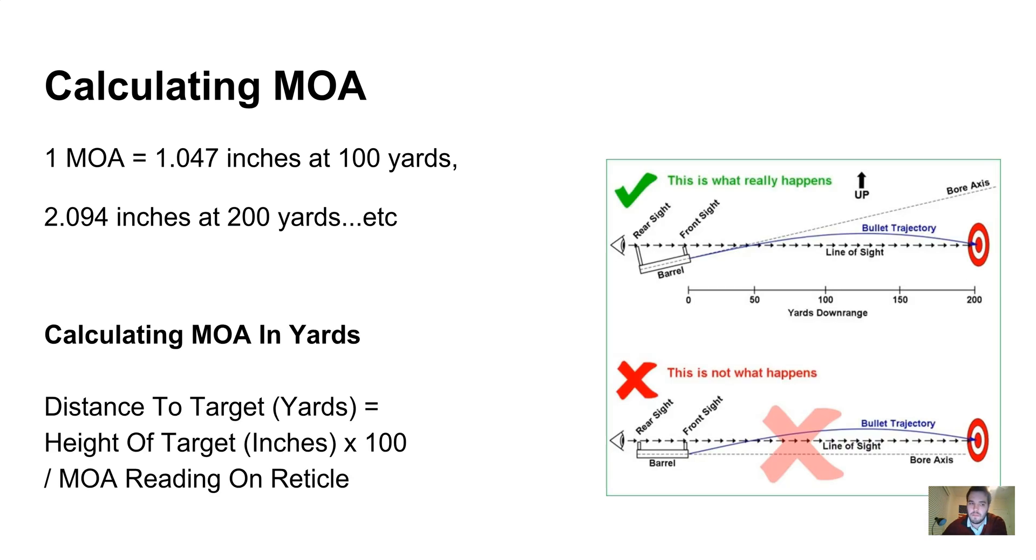When we talk about using angular measurements, it's to measure the distance to the target. You need to know the distance because your bullet doesn't fly straight—it flies in a curved trajectory. What you're literally doing with your barrel is pointing it upwards, and as soon as the bullet leaves the barrel, gravity starts taking effect. The longer out you go, the more effect gravity has on it.